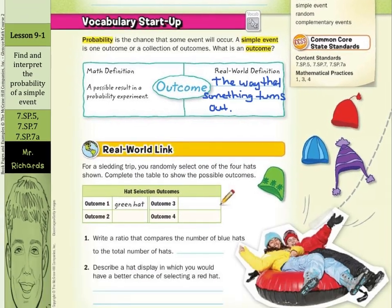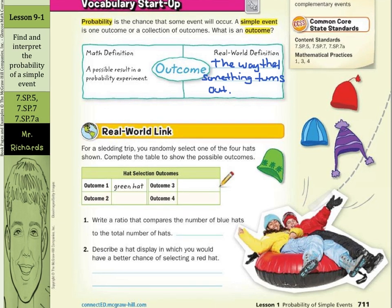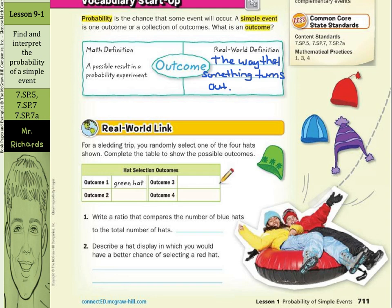Next, we have our real-world link. For a sledding trip, you randomly select one of the four hats shown. Complete the table to show the possible four outcomes. Well, the first outcome was already done for us. You could randomly close your eyes and pick a green, or you could randomly pick a blue, or a red, or a purple.